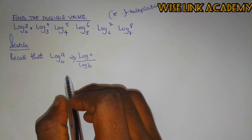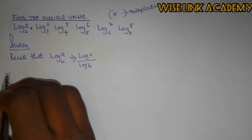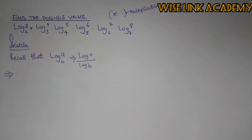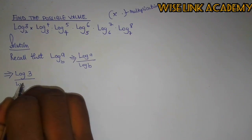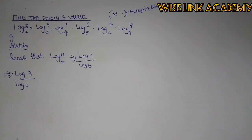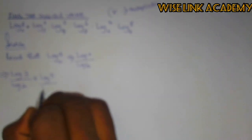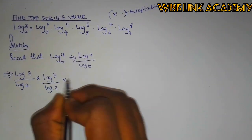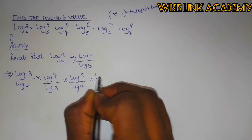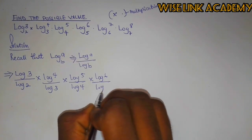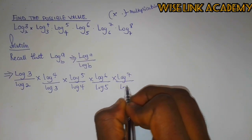So let's proceed. If I apply this rule to solve this expression, I'll be having log 3 over log 2, times log 4 over log 3, times log 5 over log 4, times log 6 over log 5, times log 7 over log 6.